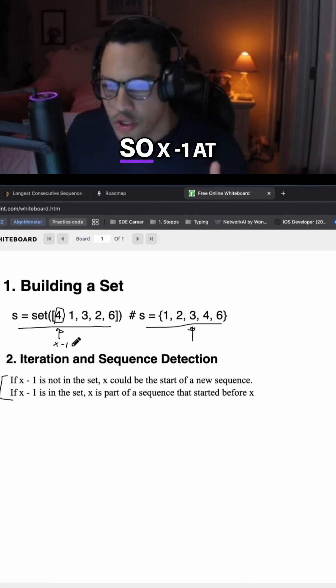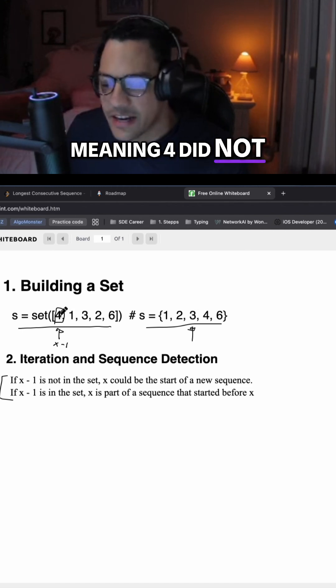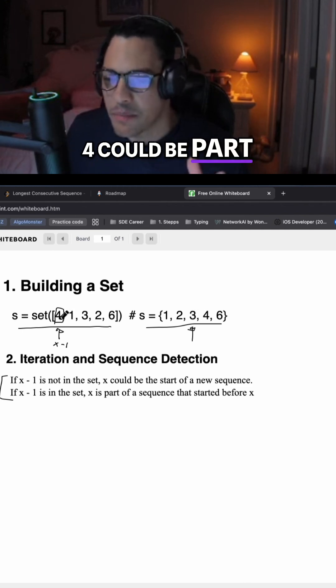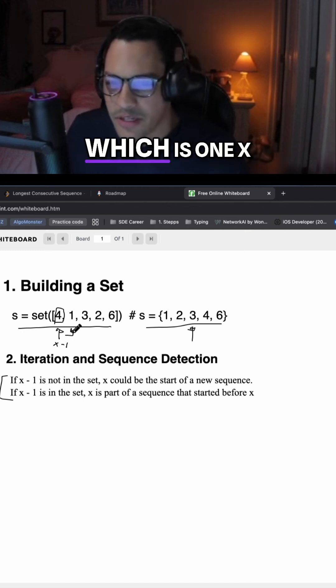So x minus 1 at this point is in the set, meaning 4 did not start any sequence. 4 could be part of a sequence, so we move into the next one, which is 1.